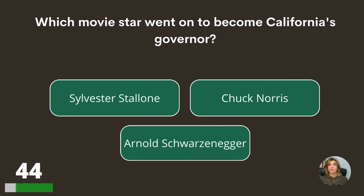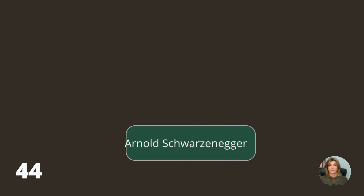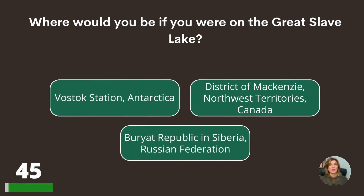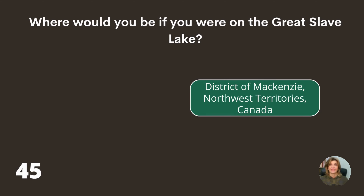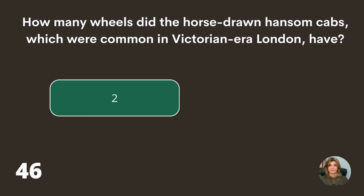Which movie star went on to become California's governor — Sylvester Stallone, Chuck Norris, or Arnold Schwarzenegger? Where would you be if you were on the Great Slave Lake — Rostock Station Antarctica, District of Mackenzie Northwest Territories Canada, or Buriat Republic Siberia Russian Federation? In Canada, the District of Mackenzie Northwest Territories. How many wheels did the horse-drawn hansom cabs common in Victorian-era London have — two, three, or four? Two.